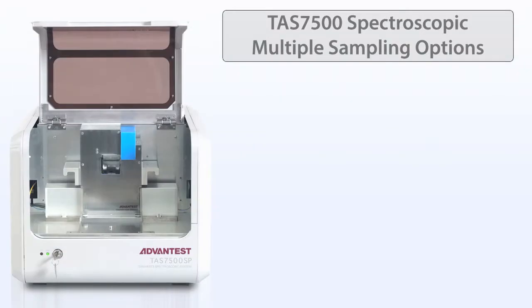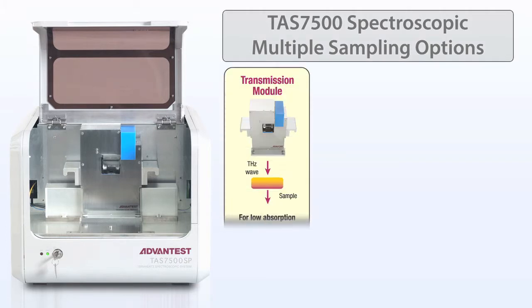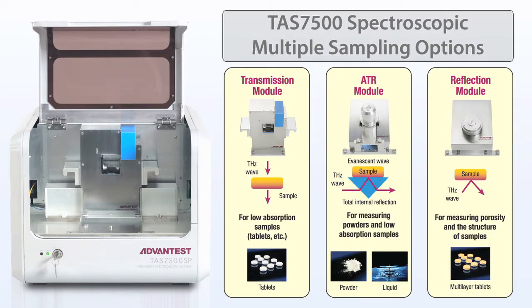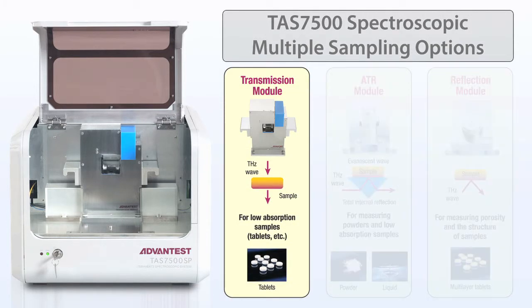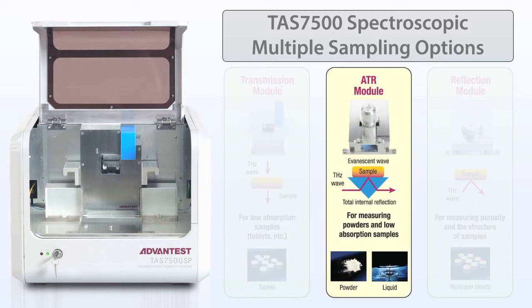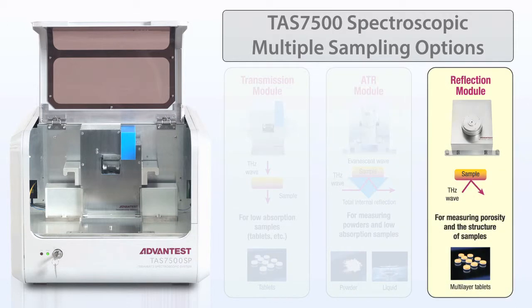The TAS7500 spectroscopy unit has multiple sampling options, like those used for infrared, including transmission, attenuated total reflectance or ATR, and external reflectance.